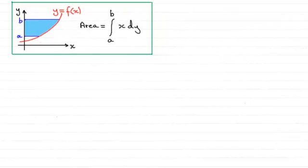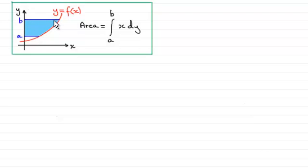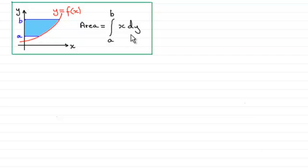In this tutorial, I want to show you how we can work out the area trapped between a curve y equals some function of x, the y-axis, and two lines y equals a and y equals b. It can be shown that the shaded area is equal to the integral of x with respect to y, going between the limits y equals a and y equals b. I'm giving you this equation without proof — I just want to show you how we can use it.